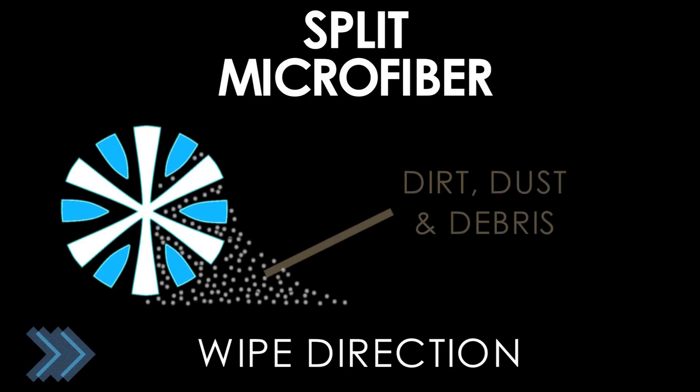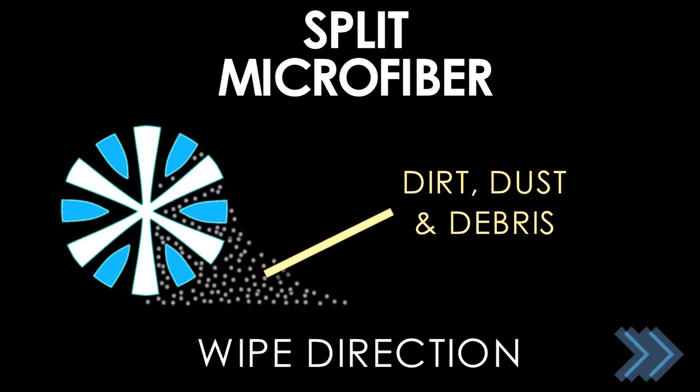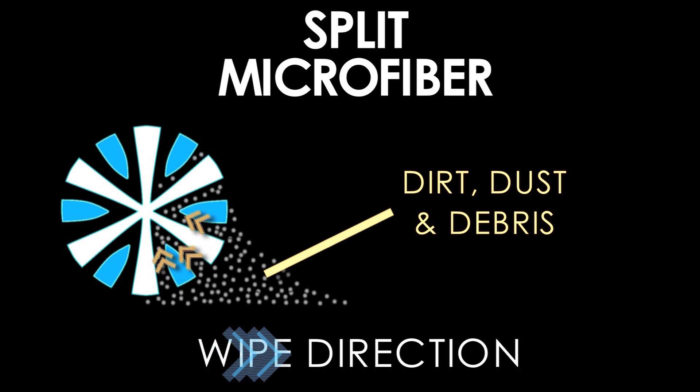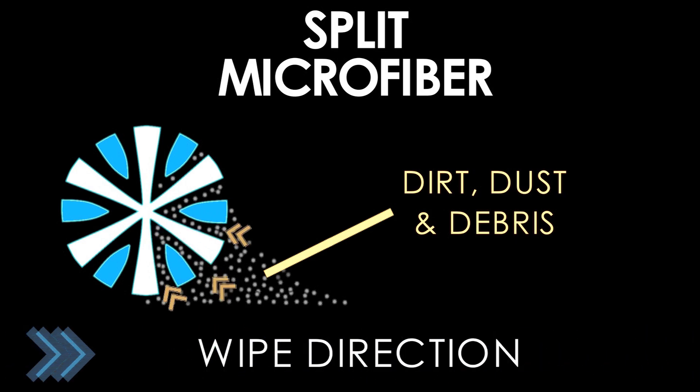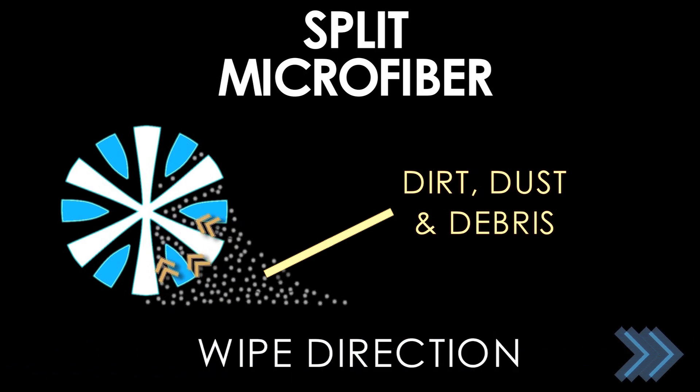This star shape allows microfiber to trap dust and debris up inside the fiber, pulling it away from the surface you're working on. This includes the removal of 99.9% of surface-bound bacteria.